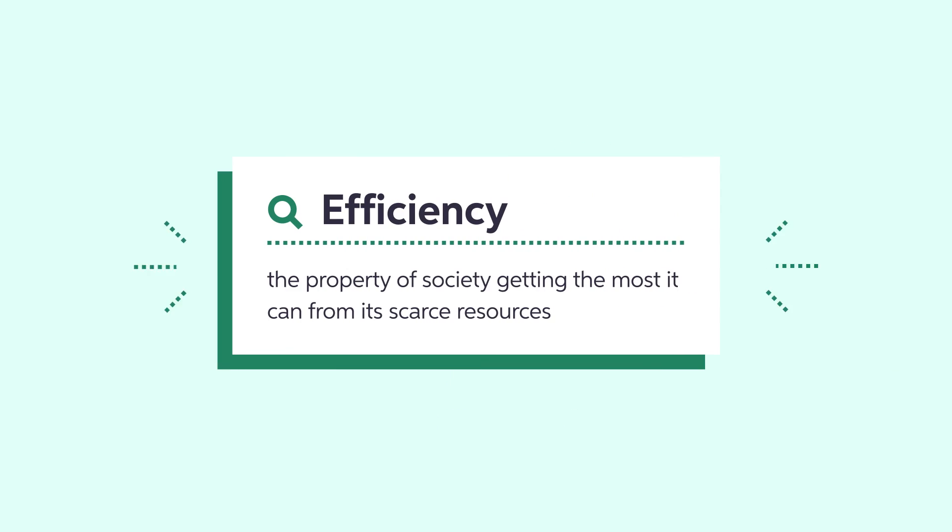Why is QStar socially efficient? Consumer net benefits are the difference between the price paid and the MPB received for each unit purchased. Producer net benefits are the difference between the price received and the MPC paid for each unit.